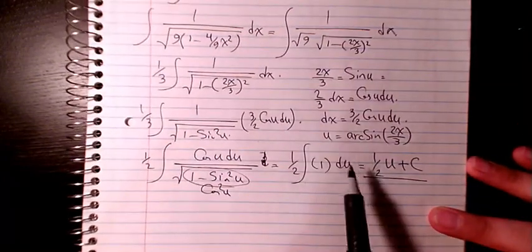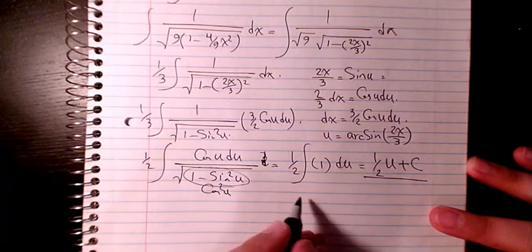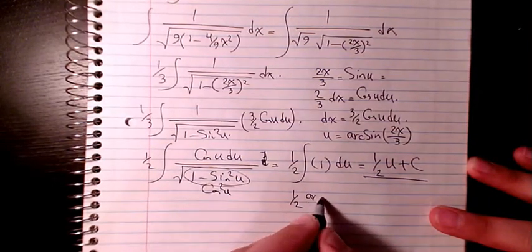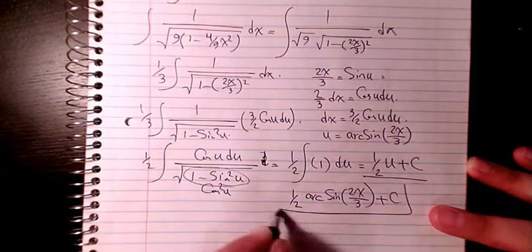And then what was u? u in here is arc sine 2x divided by 3. So the final answer is going to be 1 over 2 arc sine 2x over 3 plus c.